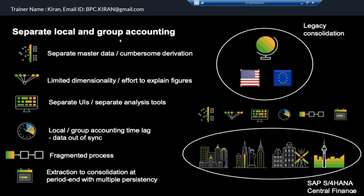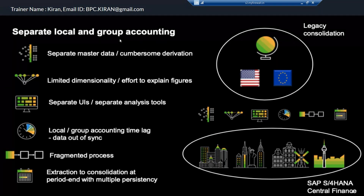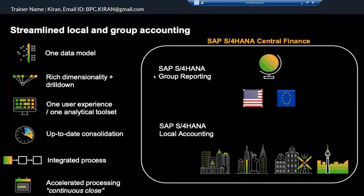Earlier we used to have ECCS, which was part of ECC, but very few customers used it. ECCS can handle SAP and non-SAP data, but very few people implemented it. BPC was implemented by many more customers. So group accounting or legal consolidation used to happen in BPC, and local accounting happened in the ECC system. Now both local accounting and group reporting are in one system — the central finance system, S4HANA.